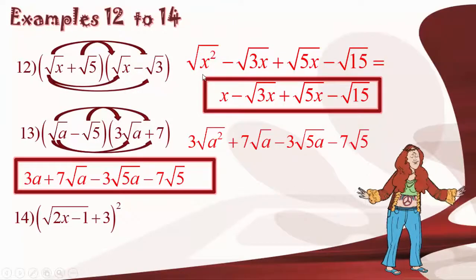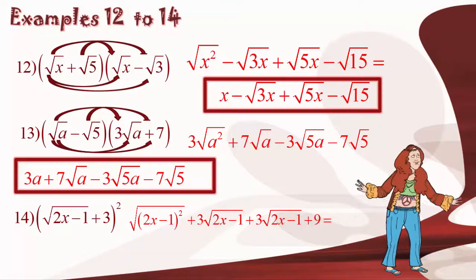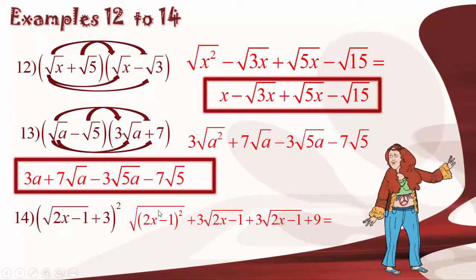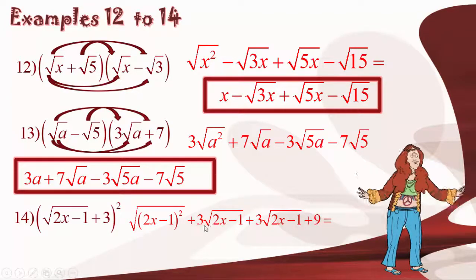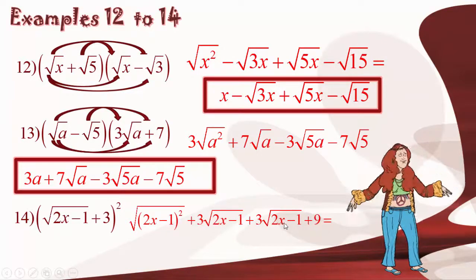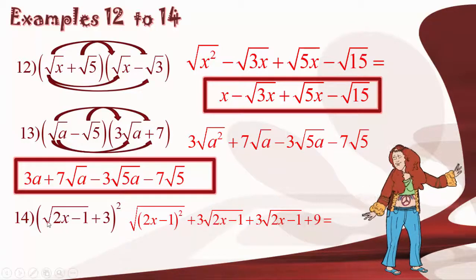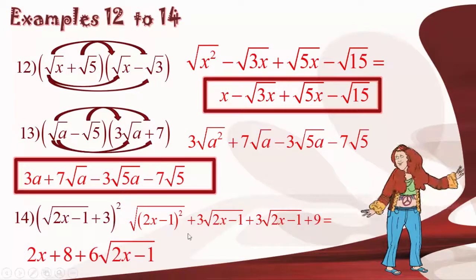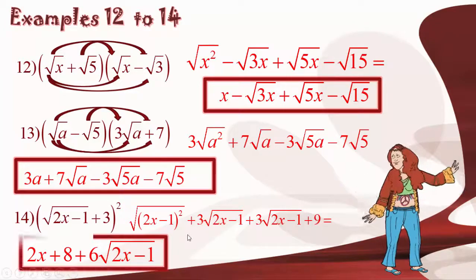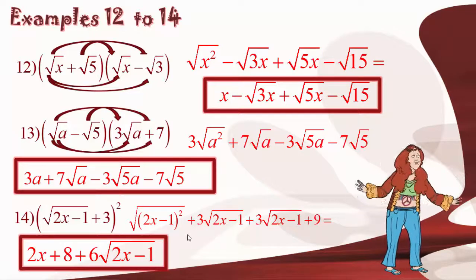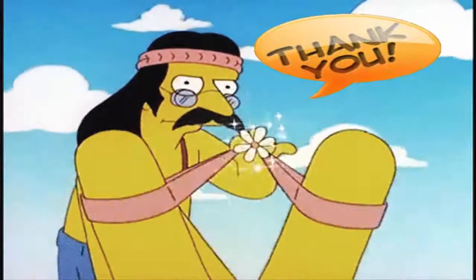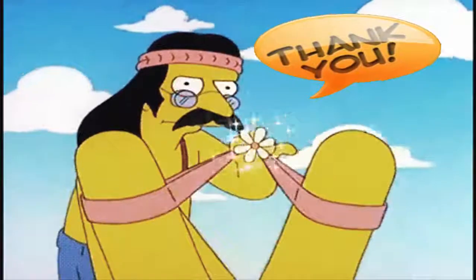Reviewing example number 14: we expanded by multiplying the binomial by itself, getting square root of 2x minus 1 squared plus 3 square root of 2x minus 1 plus 3 square root of 2x minus 1 plus 9. We collected like terms and got 2x plus 8 plus 6 square root of 2x minus 1 as our final answer. Thank you very much, I hope you enjoyed this video. Be well, take care and goodbye for now.